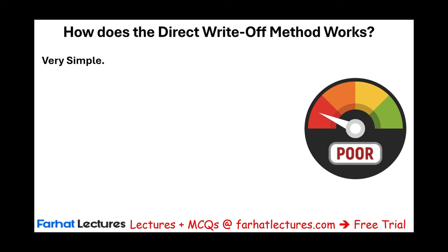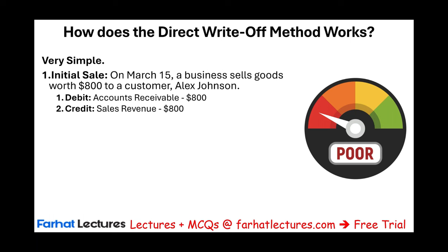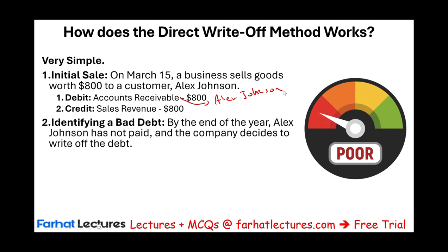How does the direct write-off method work? It's one of the simplest methods. Let's illustrate with an example. On March 15th, a business sells goods worth $800 to a customer on credit. We debit accounts receivable and credit sales revenue. The accounts receivable is specifically for Alex Johnson.